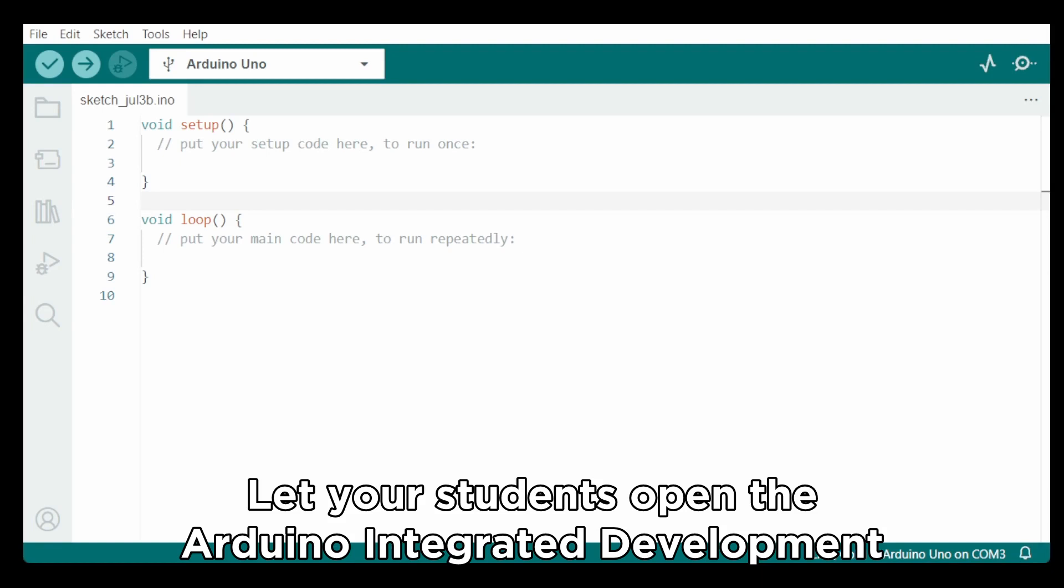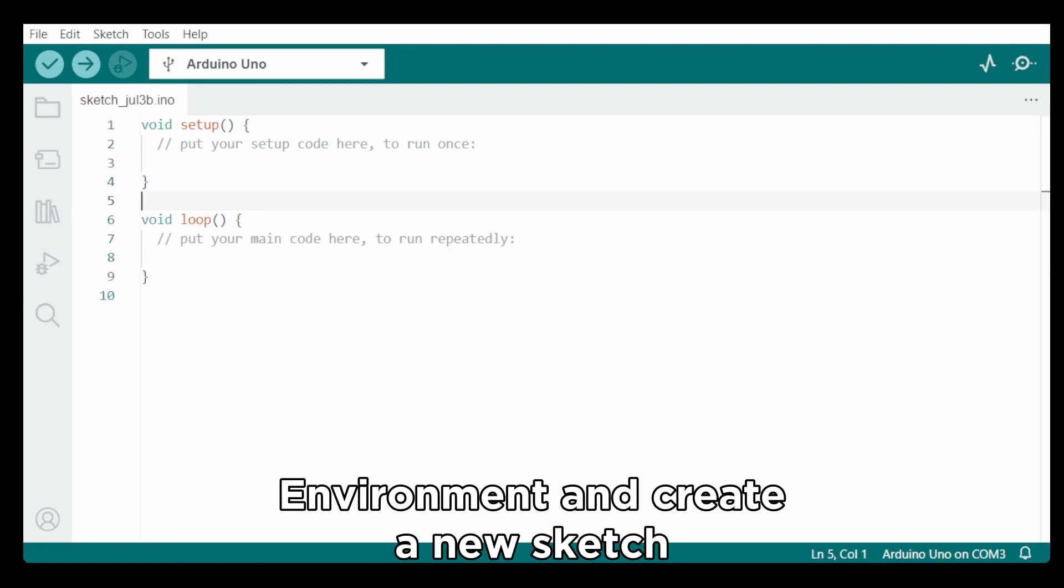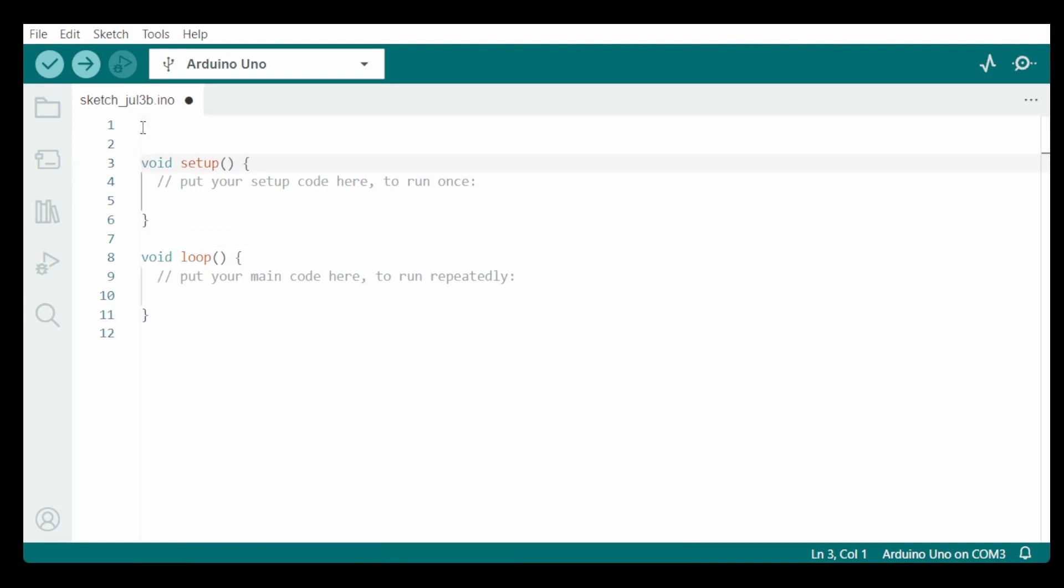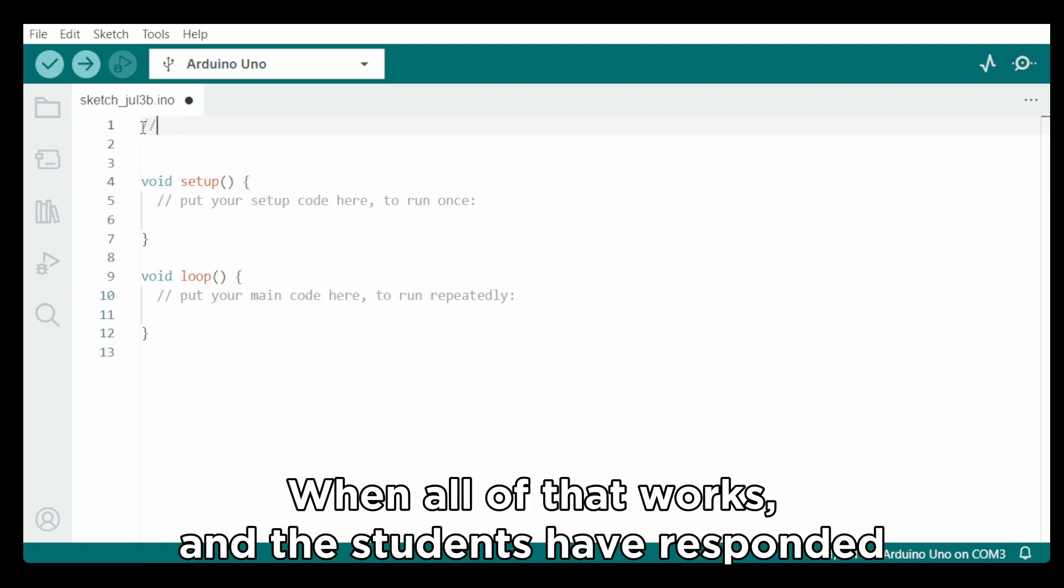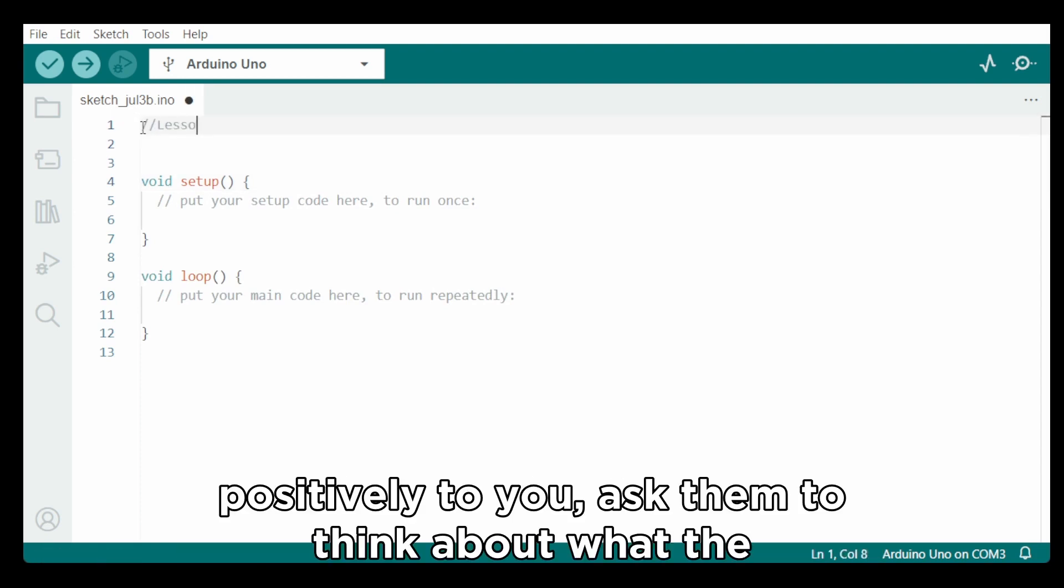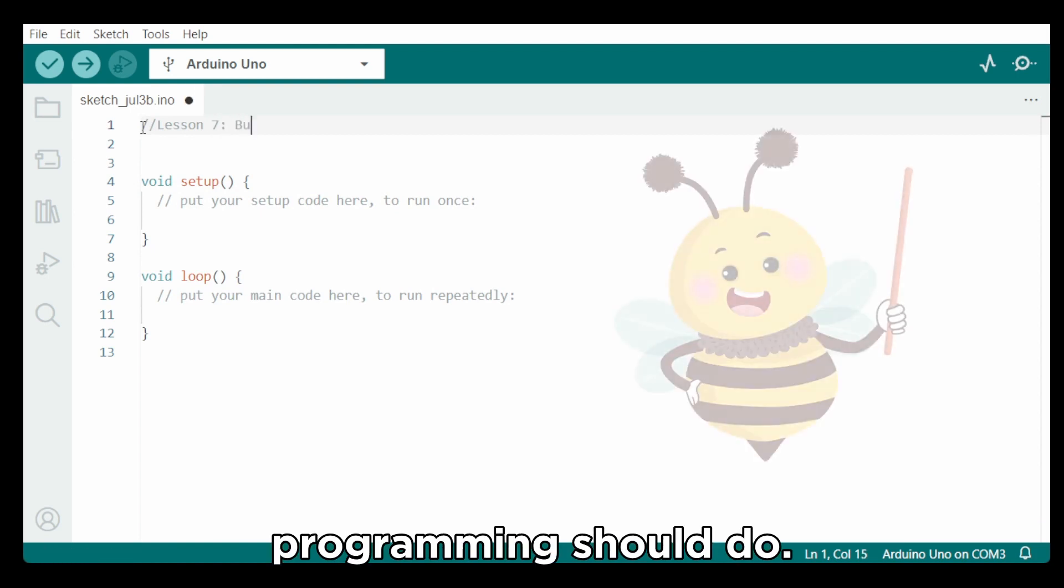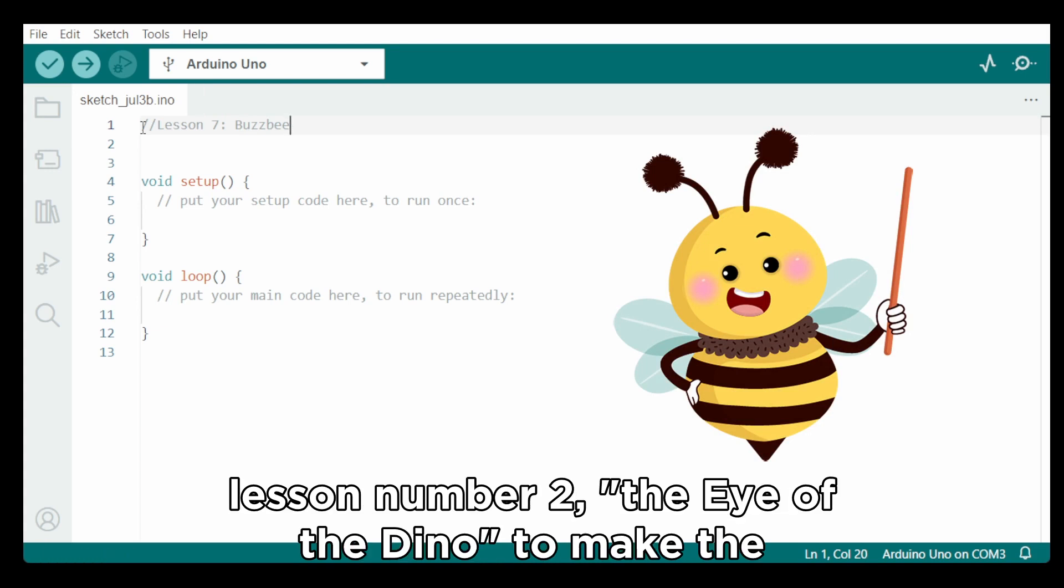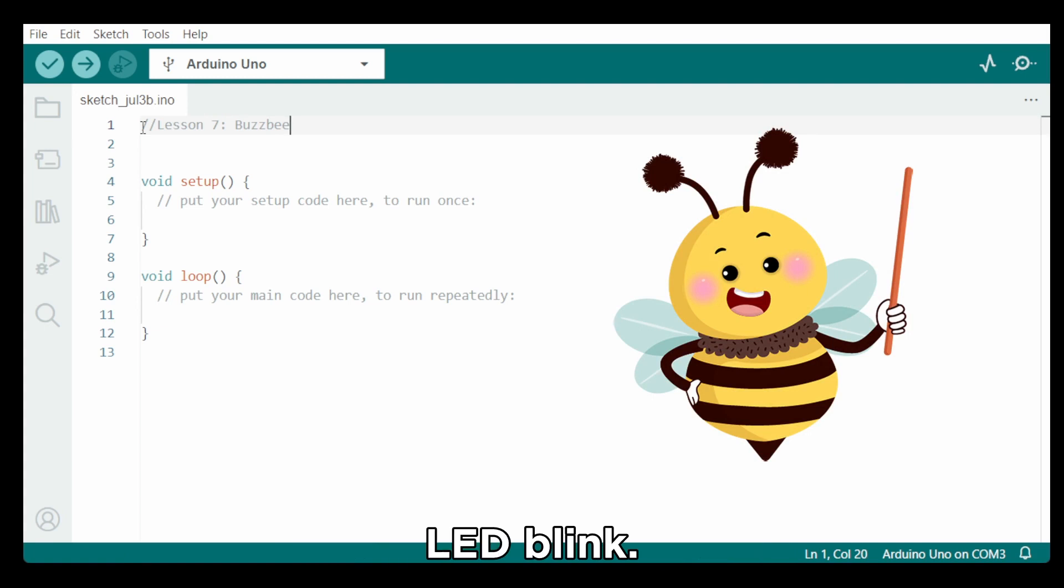Let your students open the Arduino integrated development environment and create a new sketch called Lesson 7 Busby. When all of that works and the students have responded positively to you, ask them to think about what the programming should do. Remind them of the commands that they used in lesson number 2, the eye of the dino, to make the LED blink.